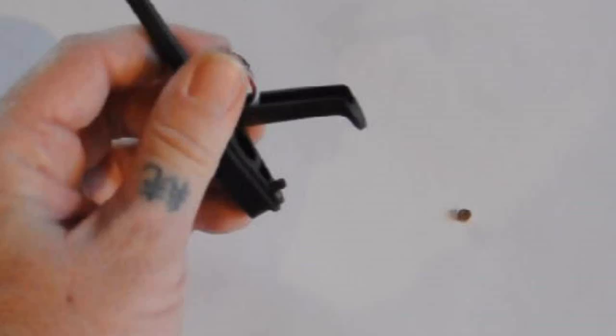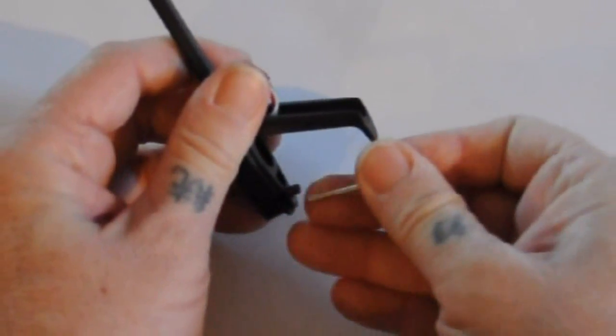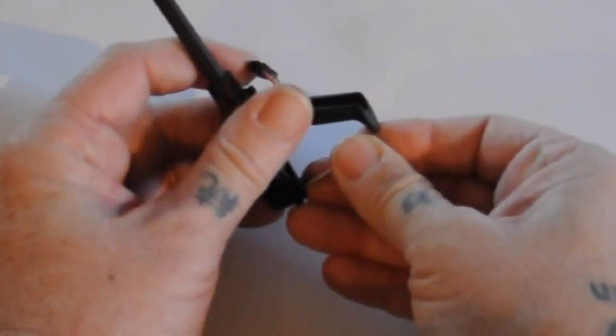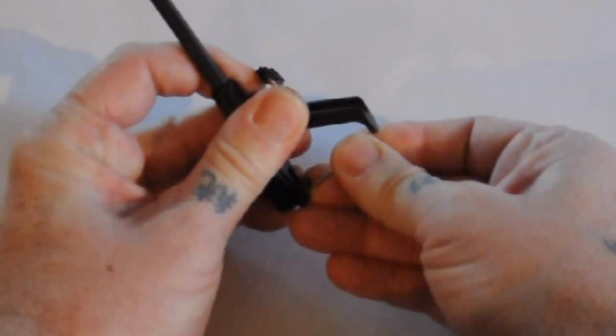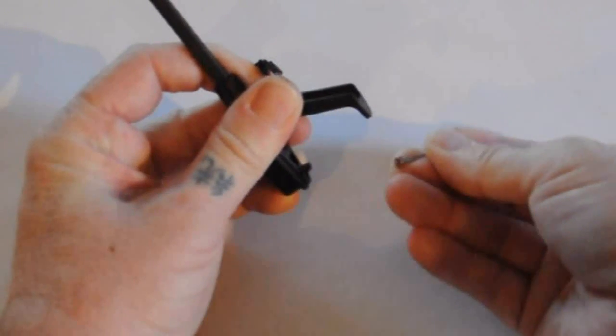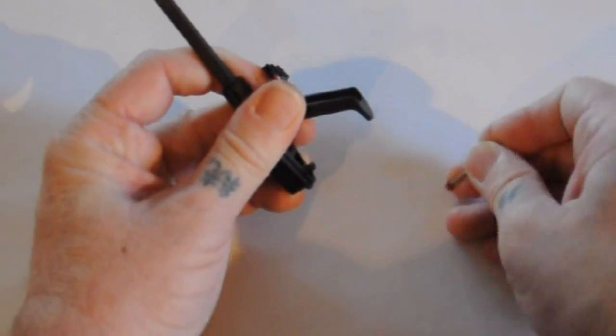The same process is used on the reverse side. This time you want to go from left to right instead of up and down, and again the bushing pops out fairly easily.